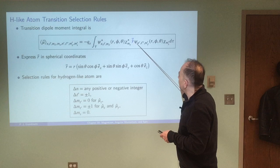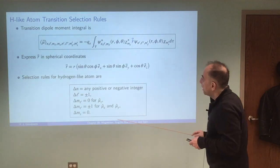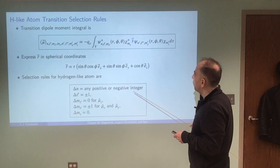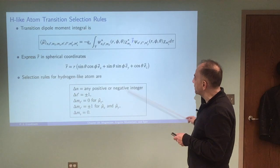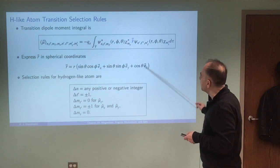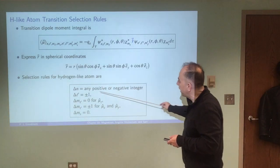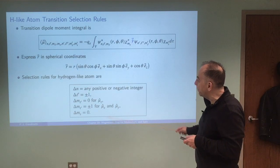So taking this term where R now can be written in terms of spherical coordinates for that distance vector between the electron and the nucleus. Substituting this into there, and I'll leave this as an exercise, evaluating this you will find that these are the selection rules for the transitions that are allowed for the hydrogen-like atom.